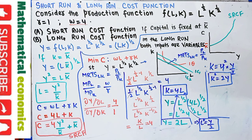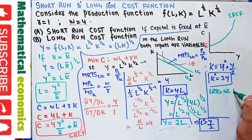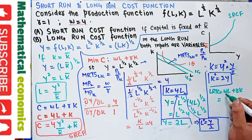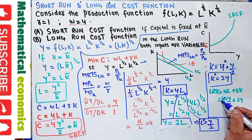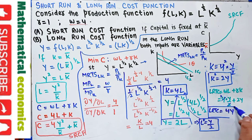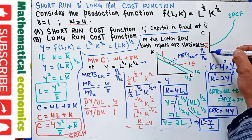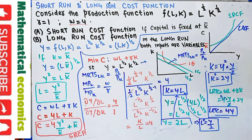Long-run total cost = wL + rK = 4 × (y/2) + 1 × (2y) = 2y + 2y = 4y. So the long-run cost function is C = 4y, which is linear in output. This means the long-run cost curve is a straight line through the origin.